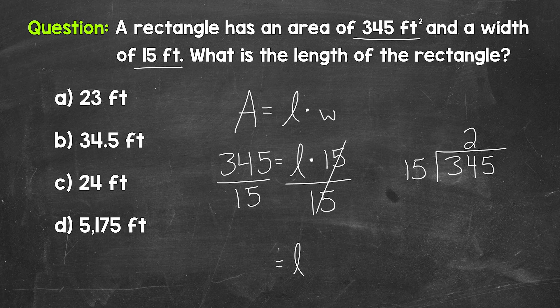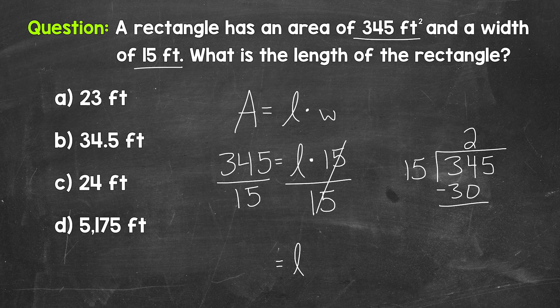So we put the 2 above the 4. And make sure that 2 is above the 4, not the 3, since we did 34 divided by 15. Now we multiply. 2 times 15 is 30. Subtract. 34 minus 30 is 4.